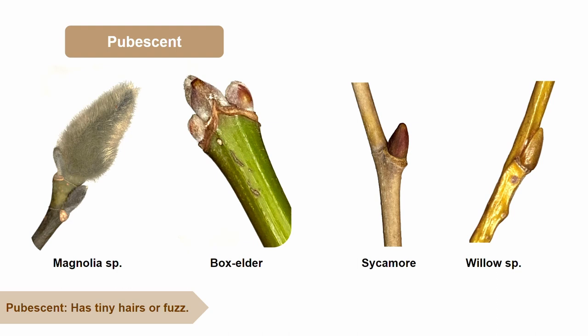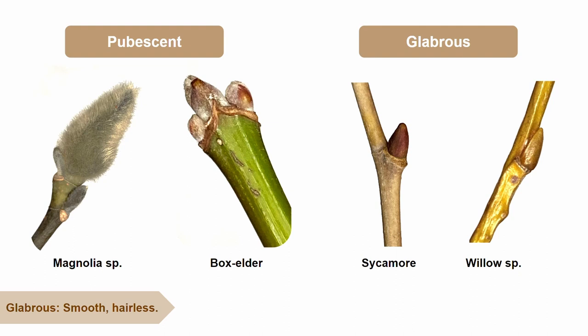Another term that is useful to know is glabrous. Glabrous means a part of a plant is smooth and has no hair or fuzz present. An example of glabrous would be the lateral bud of a sycamore twig — there are no hairs present on this twig. A glabrous bud can also be waxy, as seen by the picture of the lateral bud on this willow twig. Both the sycamore and willow have valvate bud scale arrangements, but each bud only has one bud scale that acts like a cap.